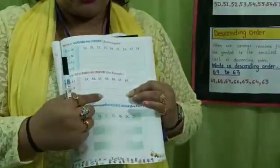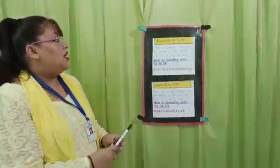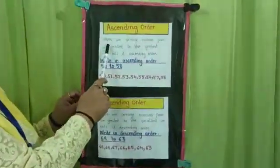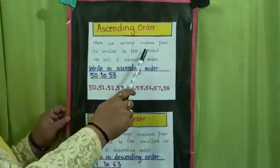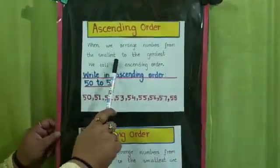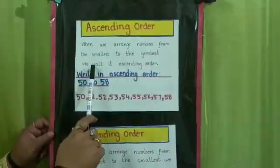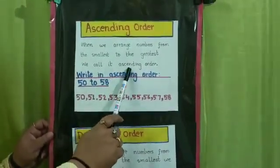Good morning parents and hello students. I'm going to teach class 1 mathematics. We're going to learn today ascending order and descending order. Ascending order: when we arrange numbers from the smallest to the greatest, we call it ascending order.